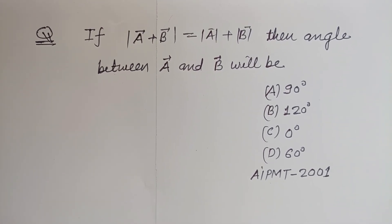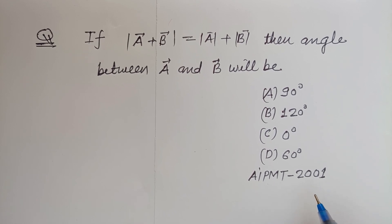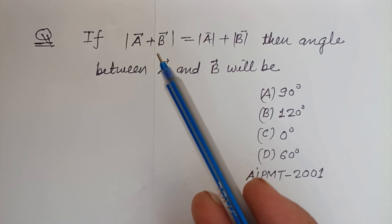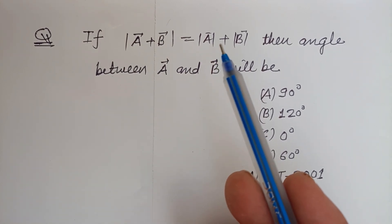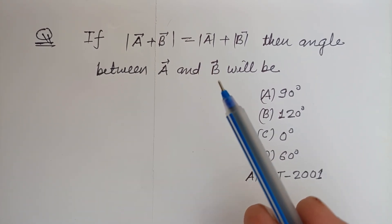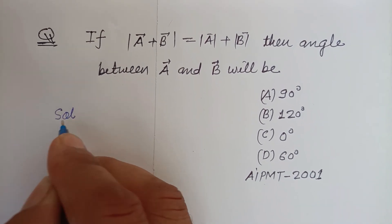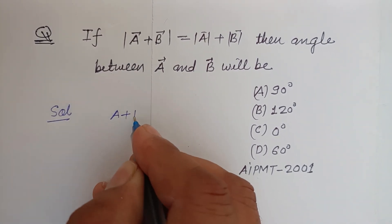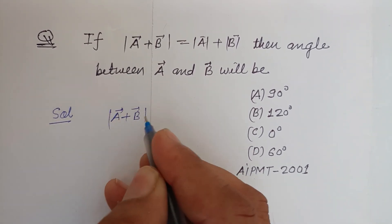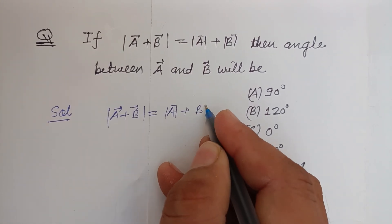Hello viewers, warm welcome to this YouTube channel. This question is from All India PMT 2001: if the magnitude of vector a plus vector b is equal to the magnitude of vector a plus the magnitude of vector b, then the angle between vector a and vector b will be?